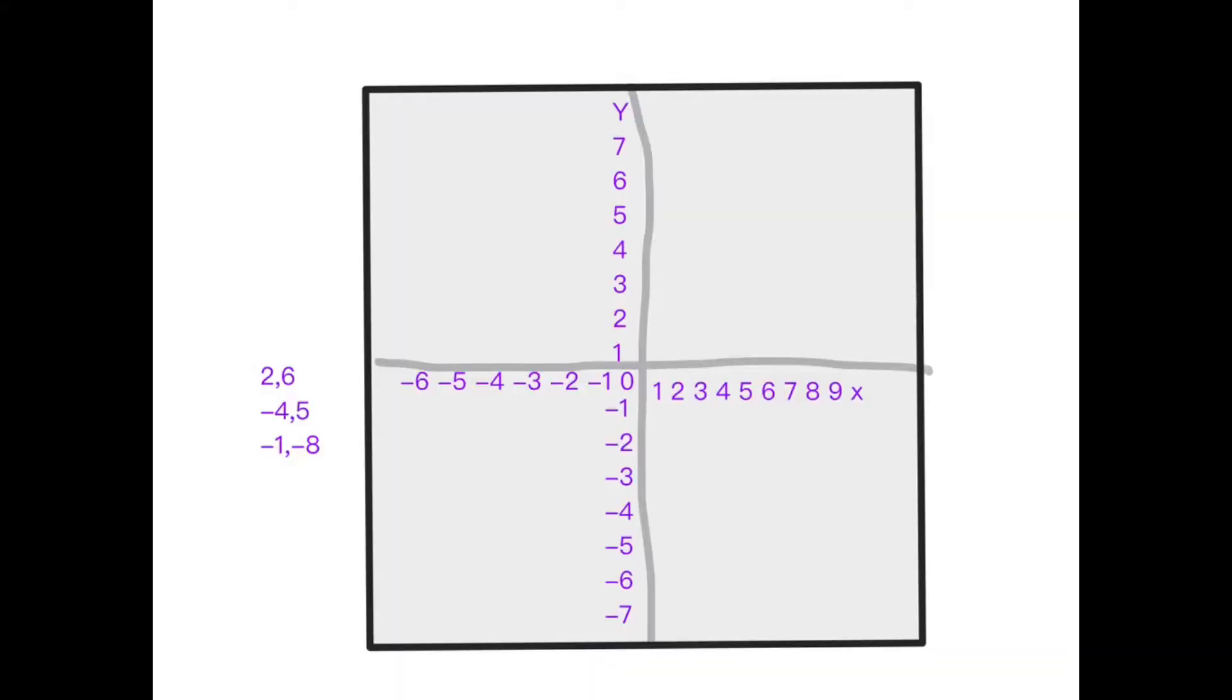First of all, we're going to teach you how to navigate a Cartesian plane. The horizontal line in the square is the x-axis, and the vertical line is the y-axis.